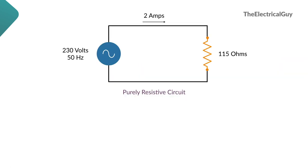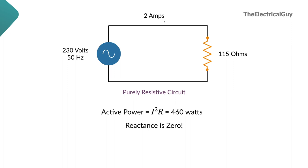Consider a purely resistive circuit with a source of 230 volts at 50 Hz and a purely resistive load of 115 ohms. The current flowing in this circuit is 2 amperes. Active power calculated using I²R gives us 460 watts. In a purely resistive circuit, reactance is 0, so reactive power calculated using I² times reactance is also 0. Therefore, active power is maximum in the purely resistive circuit while reactive power is 0.